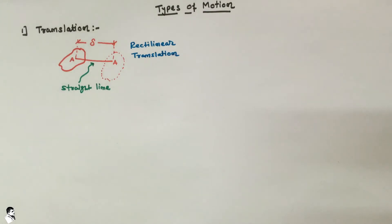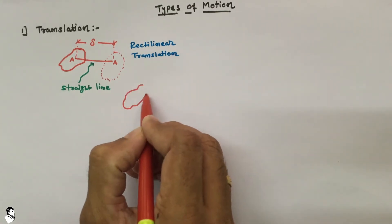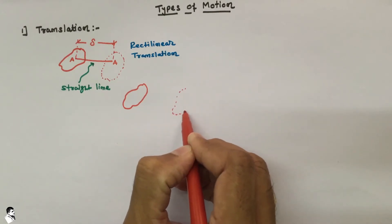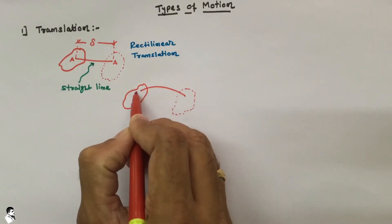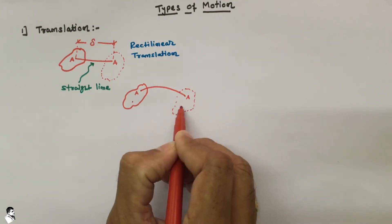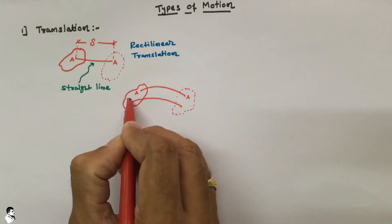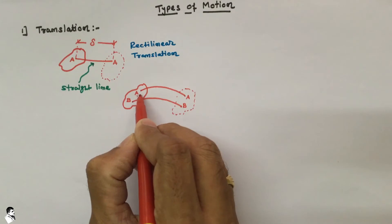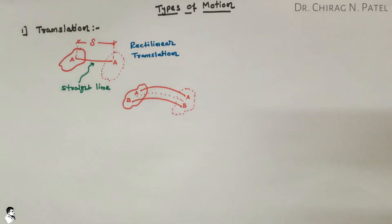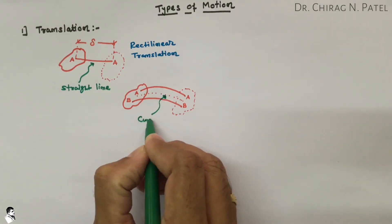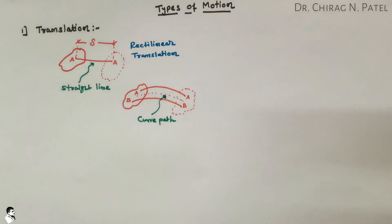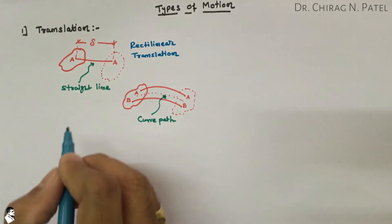Now, sometimes a body will move from one point to another point in a curved form. We indicate this with points A to A and a second point B to B, showing the path of translation of the body. Here the path is a curve, and we can say the body moves along a curve line.